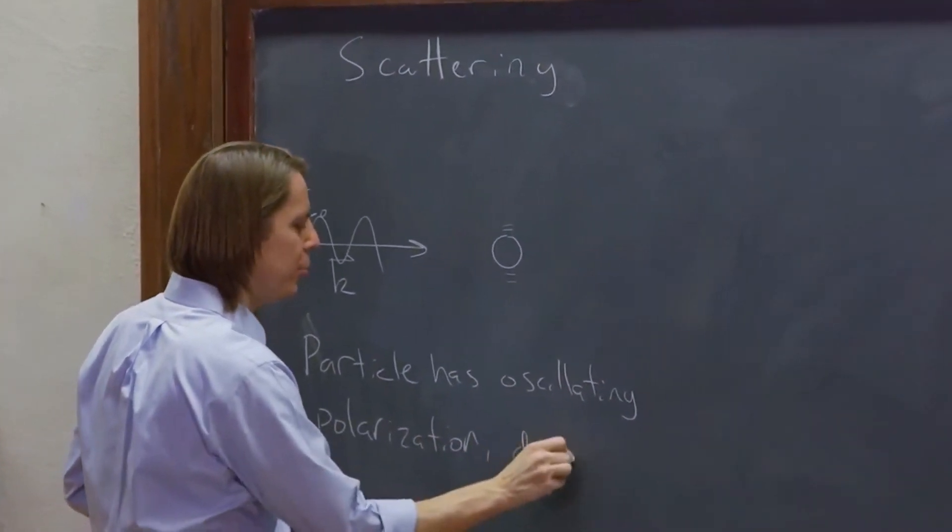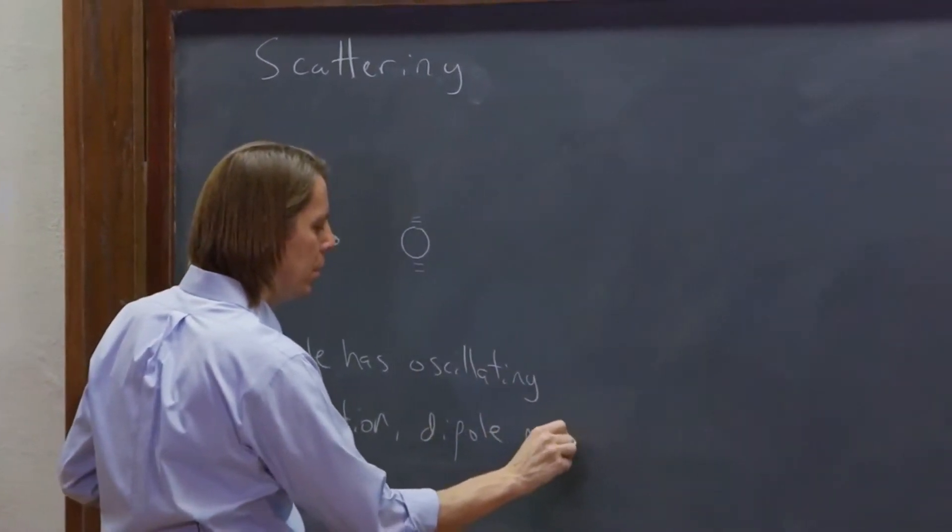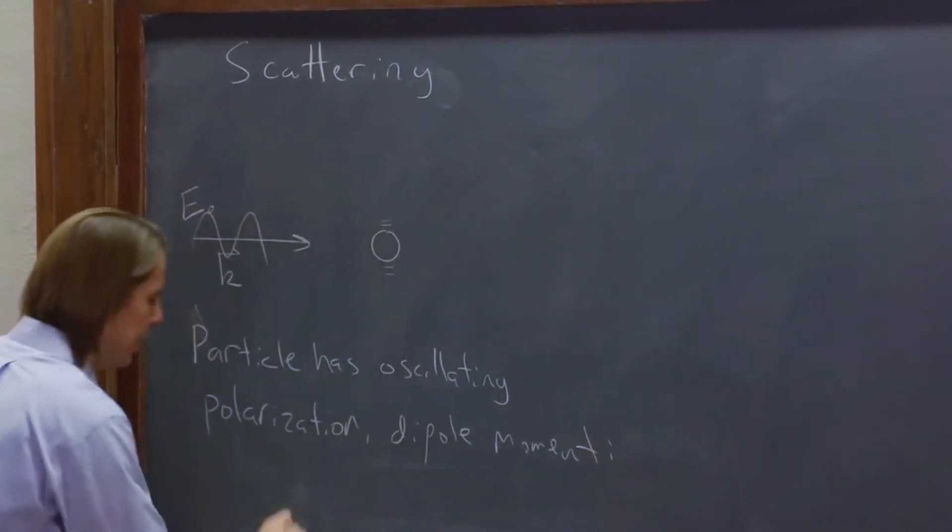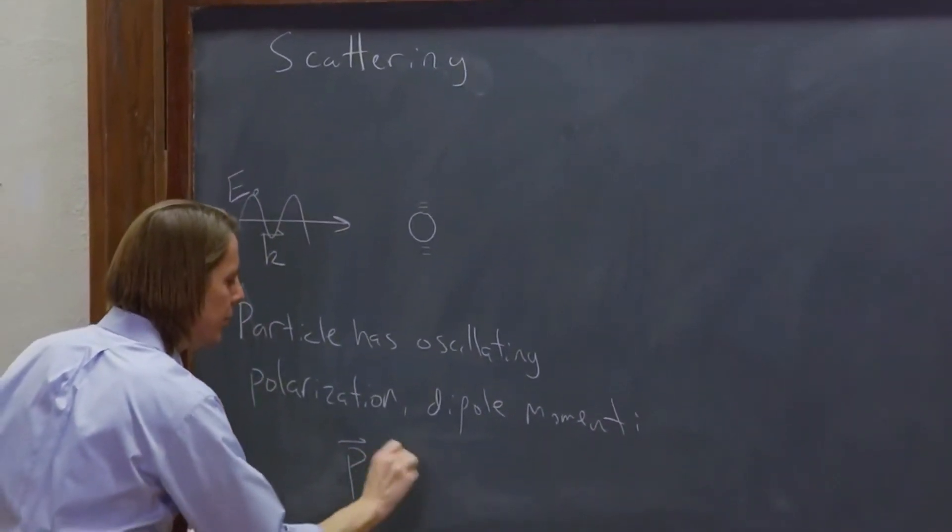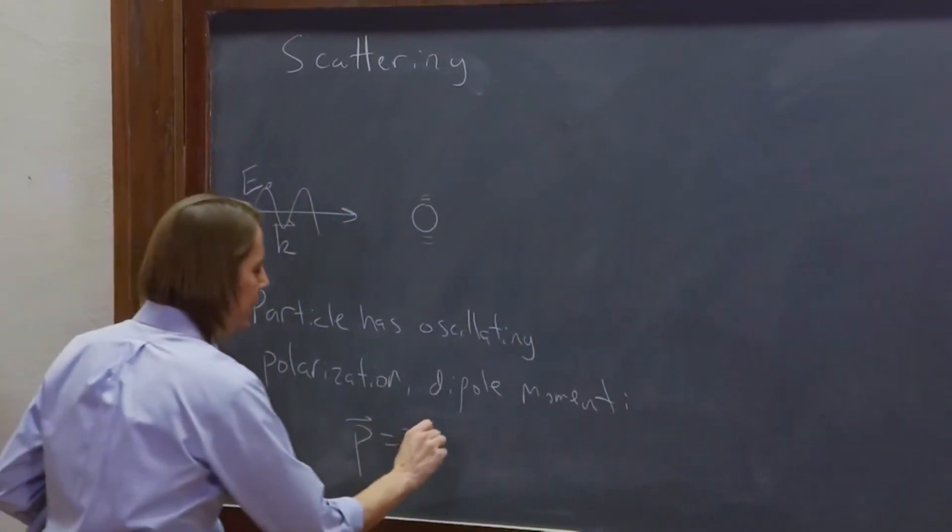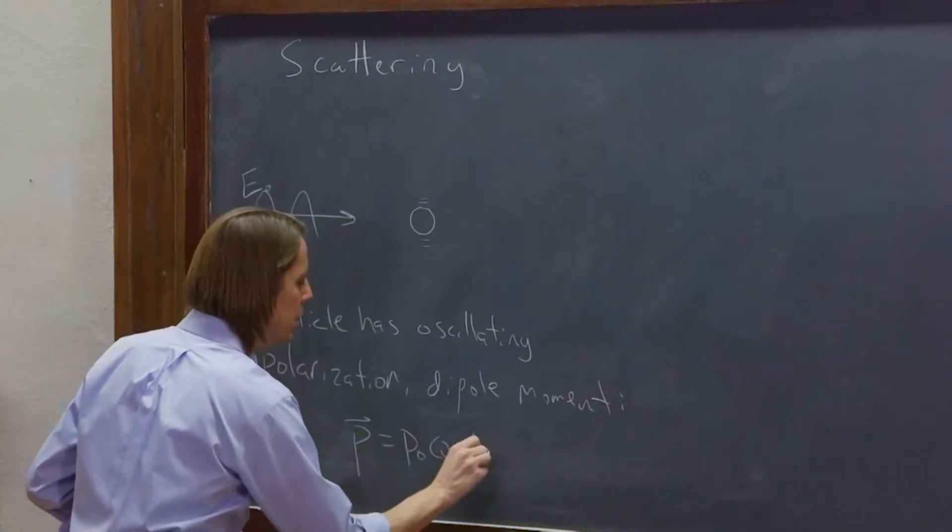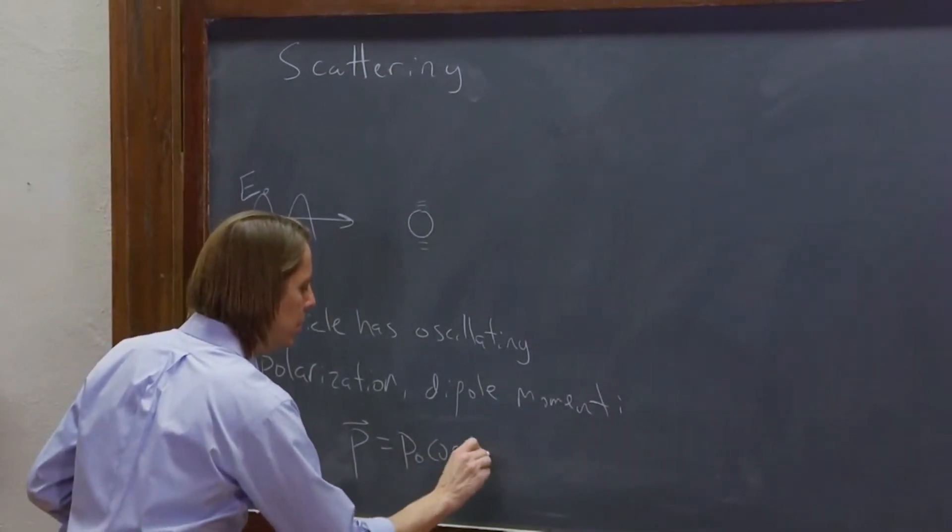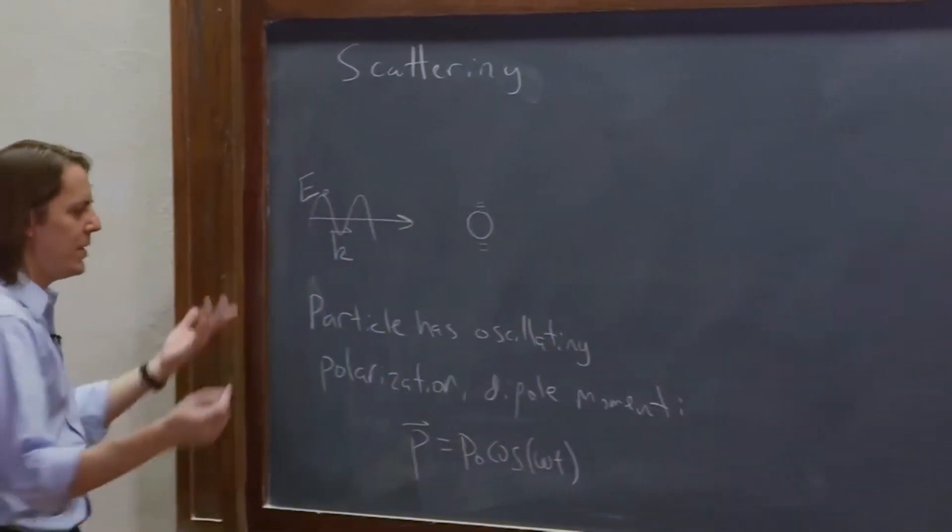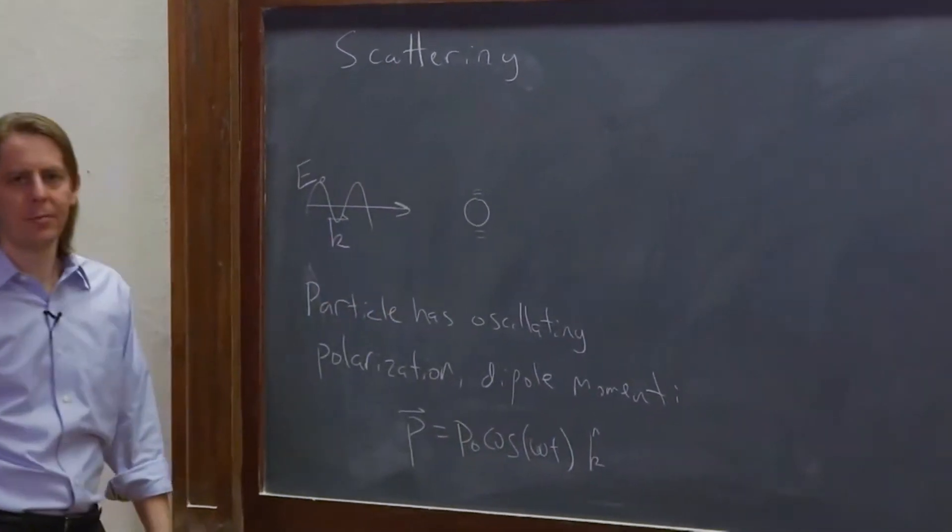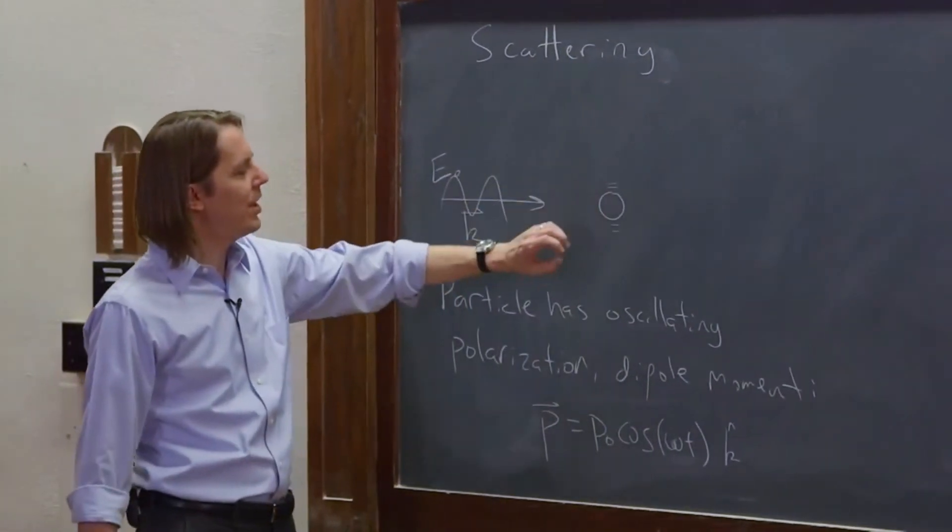Or we could say it has a dipole moment, p equals some magnitude of its dipole moment, cosine omega t. And we can give it a direction, k-hat, if we wanted to. It doesn't really matter.